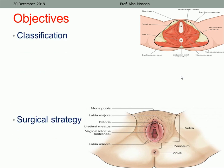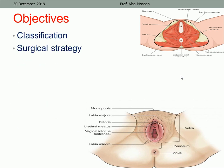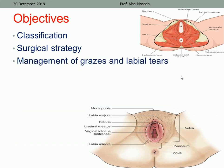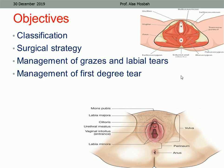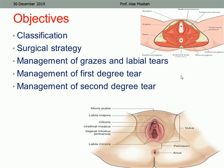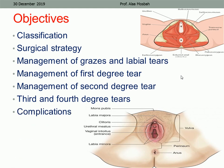If the injury extends down to the anal sphincter, it will injure the external anal sphincter muscle. It is important to know the anatomy to understand the different types of trauma. Today we will discuss the classification, surgical strategy, management of grazes and labial tears, management of first degree tear, and third and fourth degree tears — which are very important — along with complications.